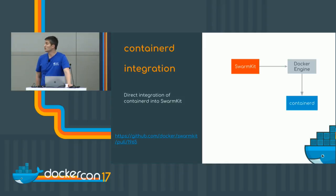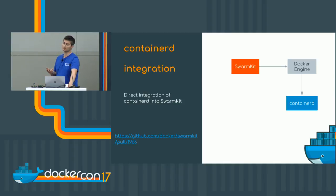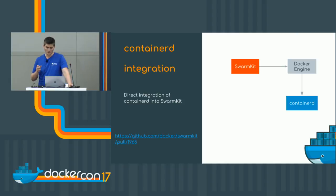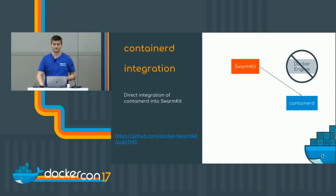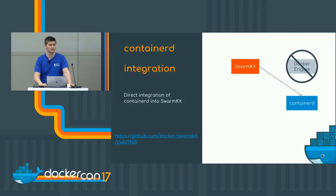So what's next? One of the biggest things we're currently working on is containerd integration. Right now you can use SwarmKit in two ways: either through Docker or standalone. In standalone mode, we have something called an executor — a swappable backend that talks to the Docker API. What we're trying to do is have an executor for containerd so that you can orchestrate and run Docker containers without Docker at all. It will go straight from SwarmCtl to SwarmKit back to containerd. There's already a PR out, and we're still sketching out the details around networking and libnetwork integration.